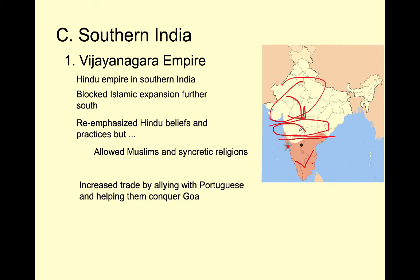This empire is under pressure from Islamic conquerors coming down and needs allies to stop the Islamic advance. At the very end of this time period — the beginning of the next — we start to see Europeans foray into the Indian Ocean. The first Europeans to do that are the Portuguese, and this empire makes alliances with the Portuguese, using gunpowder weapons to try to recapture parts of India. They help the Portuguese conquer Goa, which becomes a mostly Hindu city with small groups of Portuguese living in diasporic communities, controlling the port and increasing trade for Portugal.